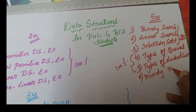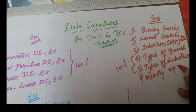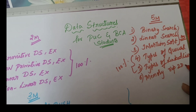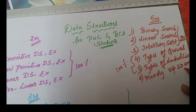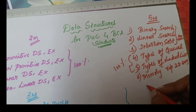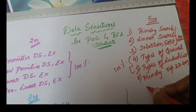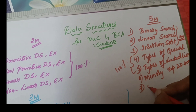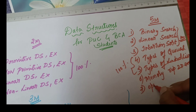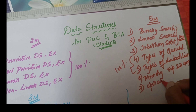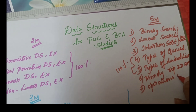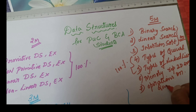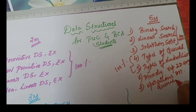One important thing to remember, students: when you explain types of queues and types of linked list, please write the diagram along with the answer. If you include the diagram, you will complete five marks. Otherwise, you can get only three or four marks.